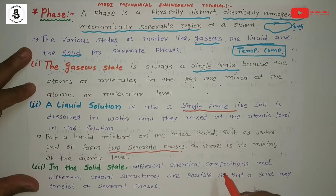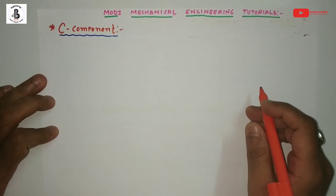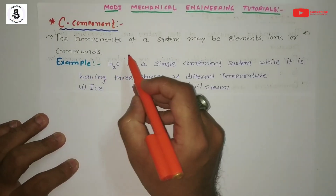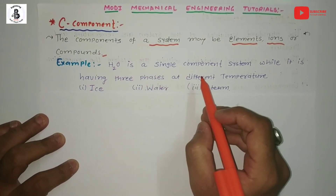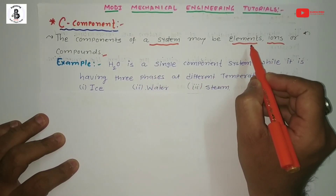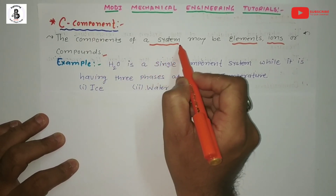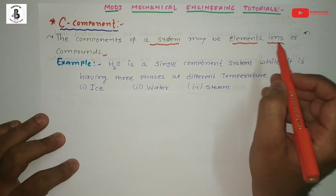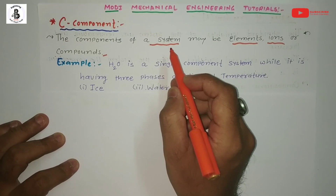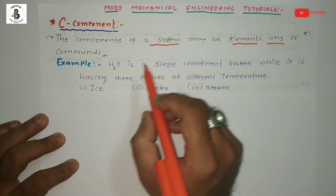After discussing systems and phases, we now talk about components. The components of a system may be elements, ions, or compounds. By the addition of elements, different ions, or compound materials, a system is formed. A system is an isolated body of matter, and the presence of atoms or ions makes a system. That system has different phases — gas, liquid, and solid — depending on the set of conditions.